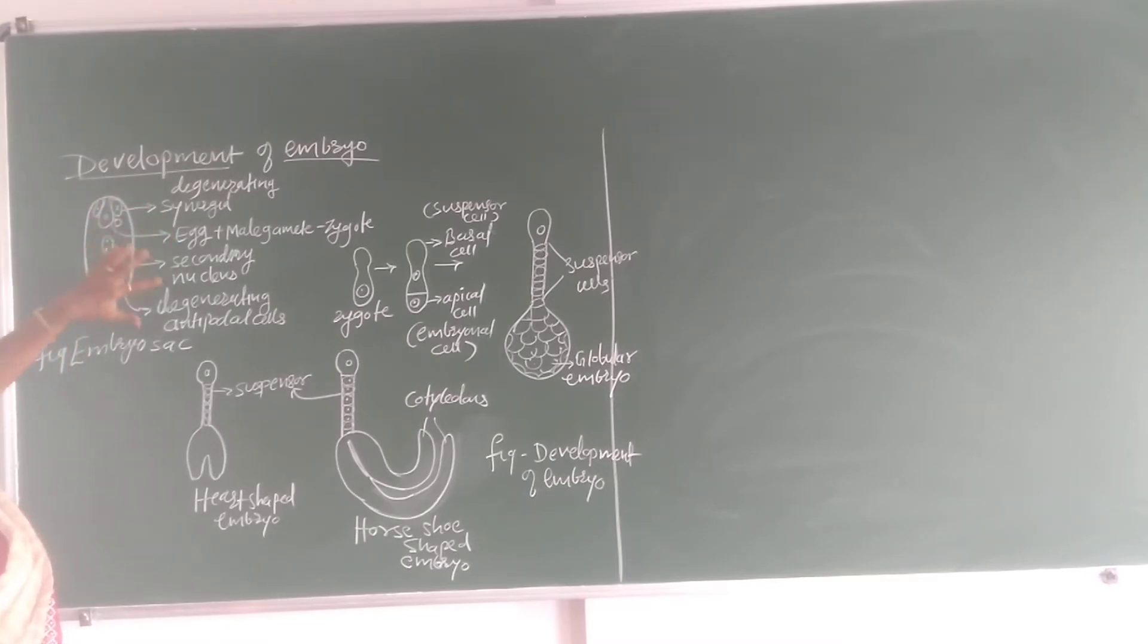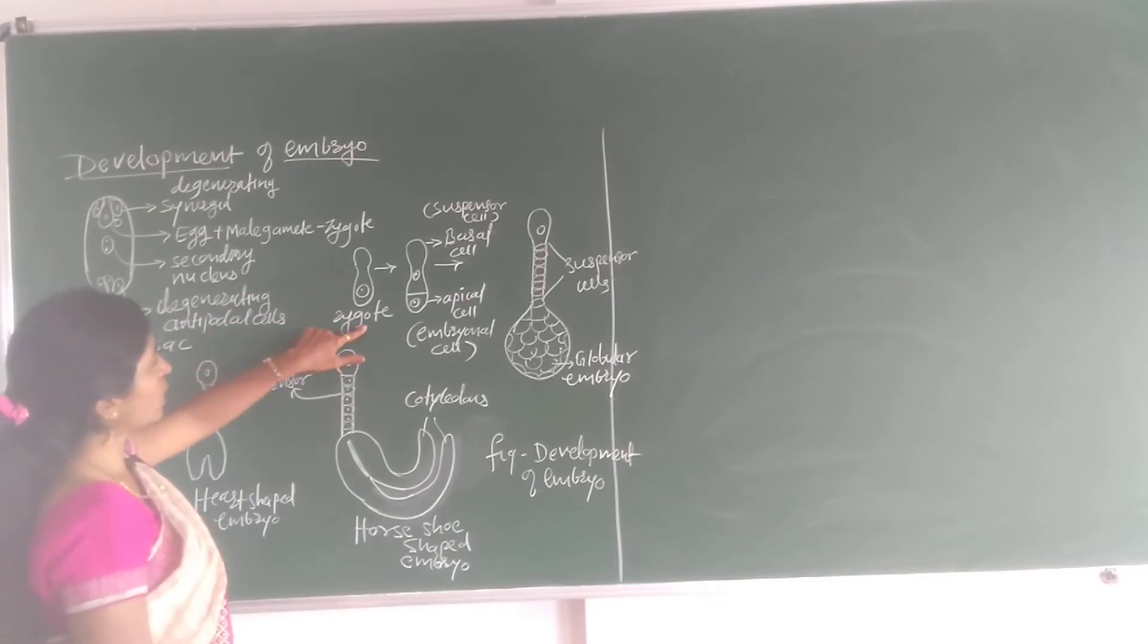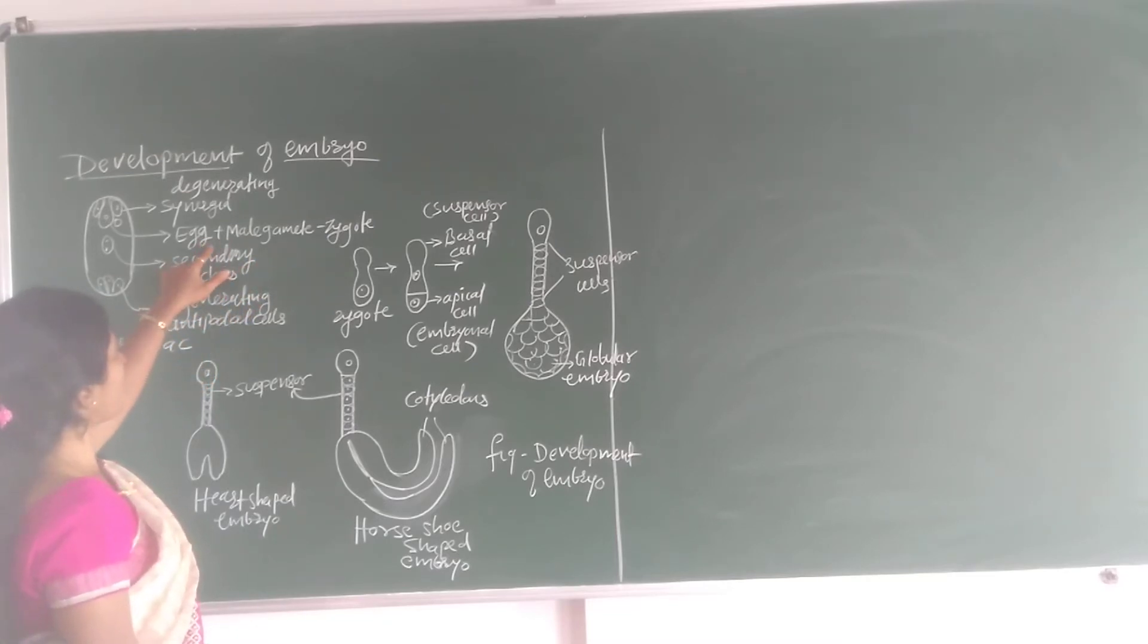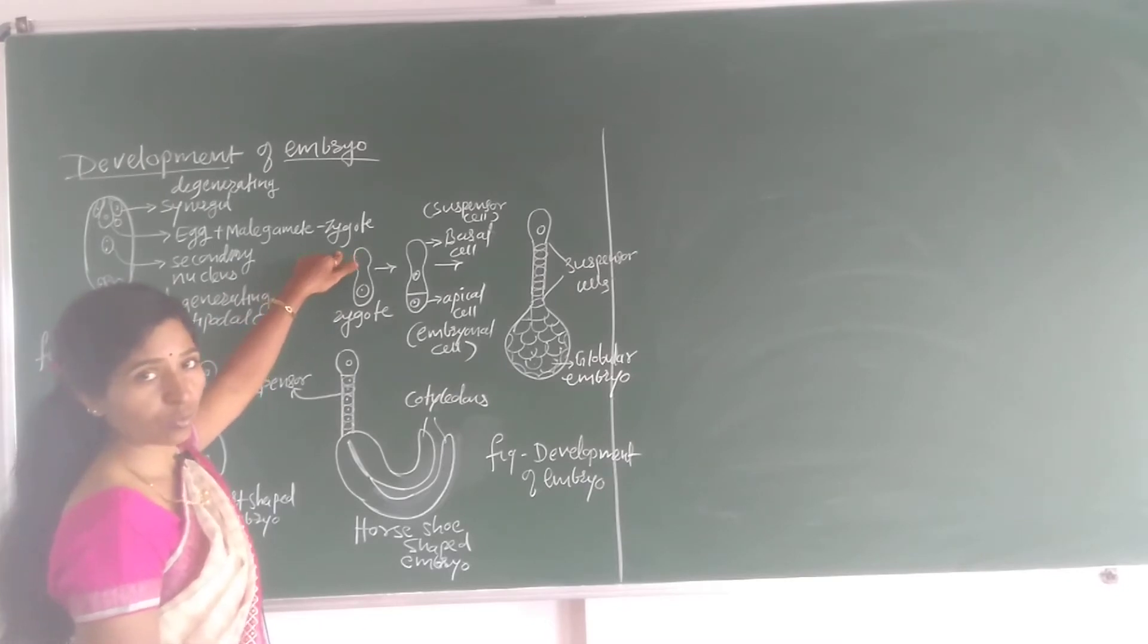But after fertilization what happens? These synergids degenerate and only this egg combines with the male gamete to form the zygote. Then this zygote, look here I will draw here this zygote. How to form: egg plus male gamete. Haploid egg, male gamete combines with haploid male gamete to form a diploid zygote.